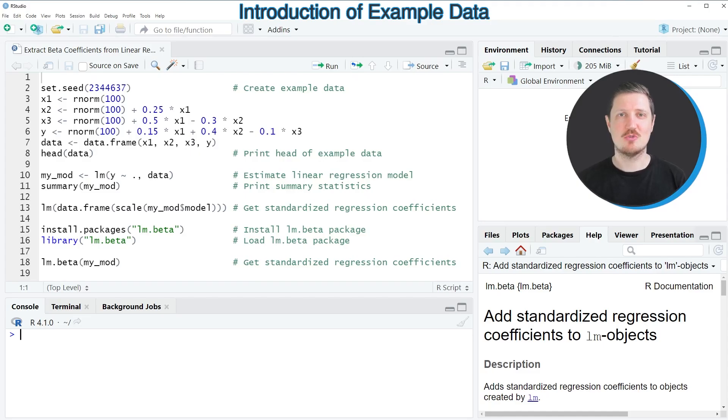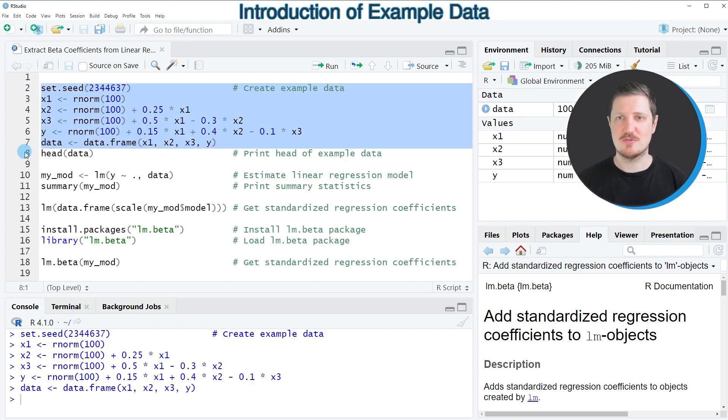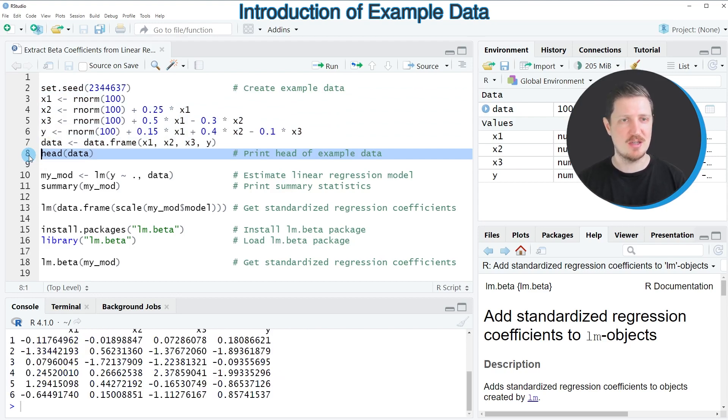In this video I will show you an example and for this example we first need to create a data frame as you can see in lines 2 to 7 of the code. So after running these lines of code a new data frame object called data is appearing at the top right and we can print the first six rows of this data frame to the console by running line 8 of the code.